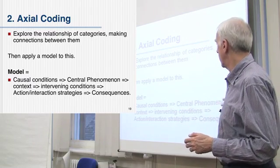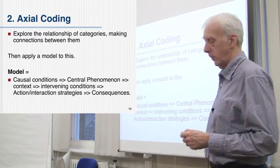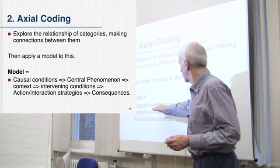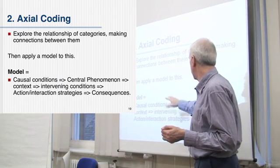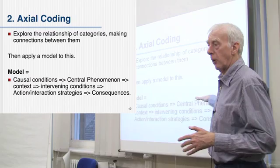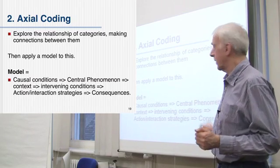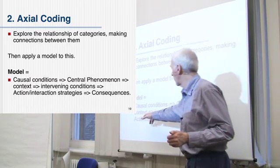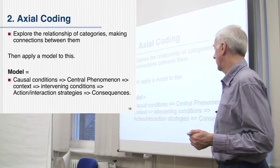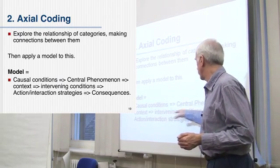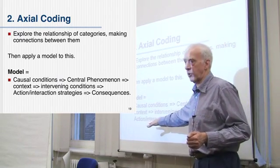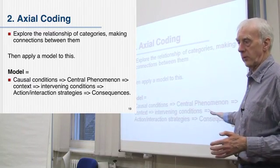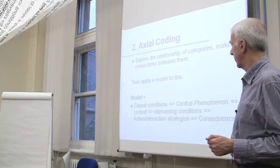They suggest this kind of model might be useful to think about: you have causal conditions for something that then leads to a central phenomenon in your study. That happens in a certain context, but there might be intervening conditions before people take some kind of action or interaction as a result of that. And then there are finally consequences that come about from that.